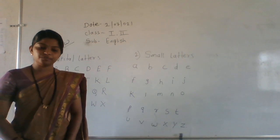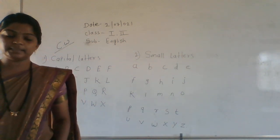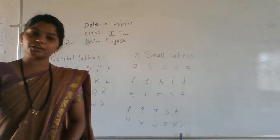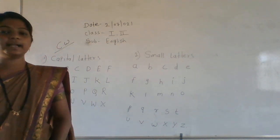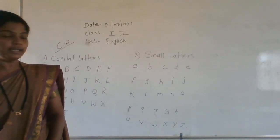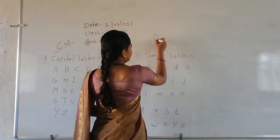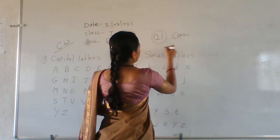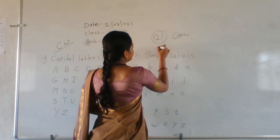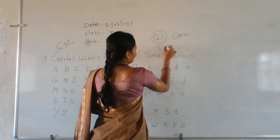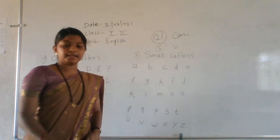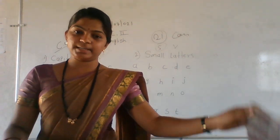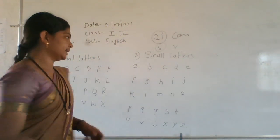And twenty-one consonants in the English alphabet. How many consonants? Twenty-one. How many? Twenty-one consonants and five vowels. We are going to learn about consonants and vowels.